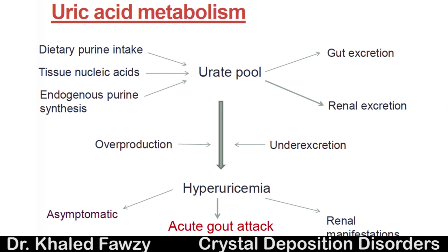Hyperuricemia occurs due to either overproduction of uric acid or under-excretion, since uric acid is excreted via the gut and kidney. If there is hyperuricemia, it could be asymptomatic, or you could have acute or chronic gout, or renal manifestations such as renal stones and chronic kidney disease.